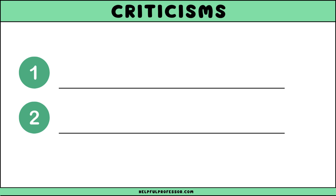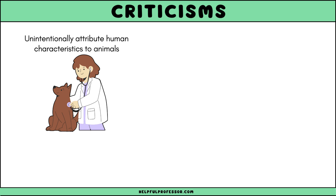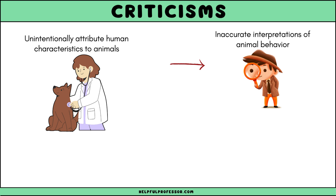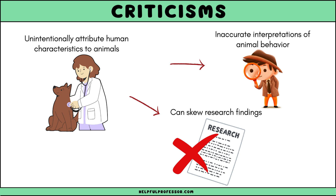Despite its strengths, comparative psychology faces criticisms. One criticism is the anthropomorphism bias: researchers may unintentionally attribute human characteristics to animals, leading to inaccurate interpretations of animal behavior. This can skew research findings and limit the validity of conclusions drawn from comparative studies.